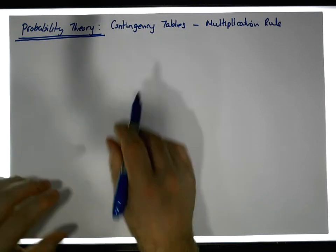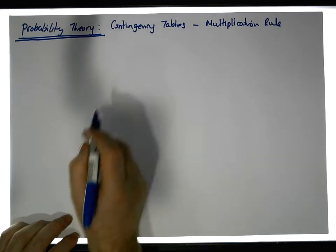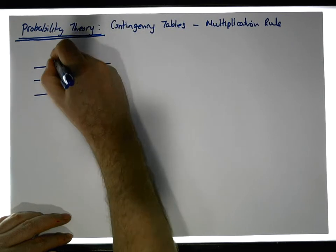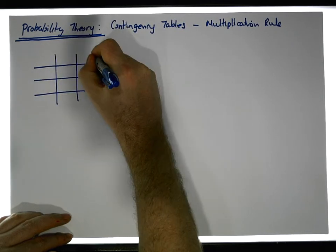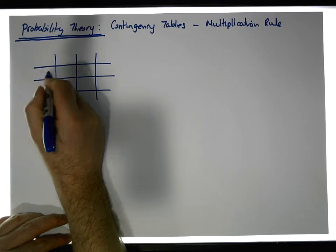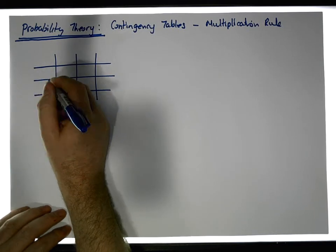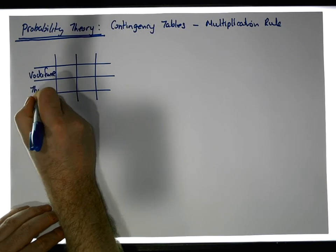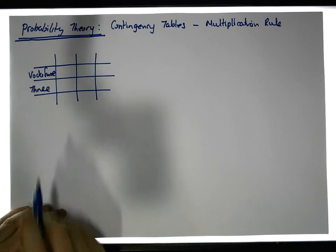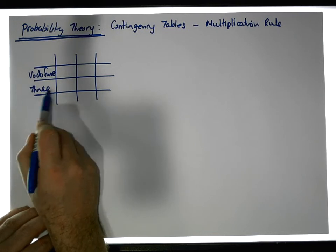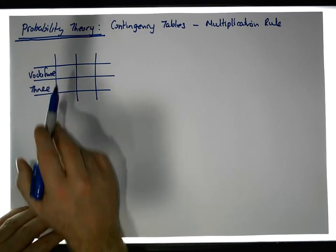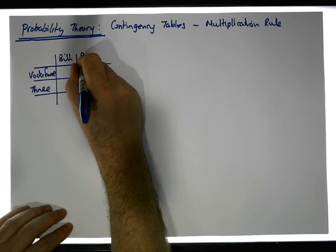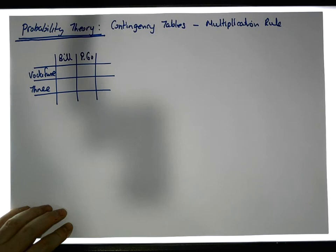Let's try to motivate this with a contingency table — a table with two variables, two levels of measurement on each variable. The first variable is the type of service provider with respect to a mobile phone: let's say Vodafone and Three. In Ireland, Vodafone and Three are service providers for mobile phones. The second variable is the type of plan: bill pay or pay-as-you-go.